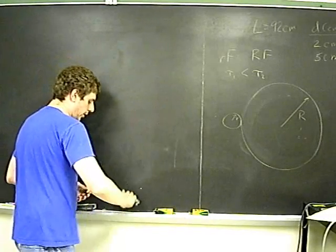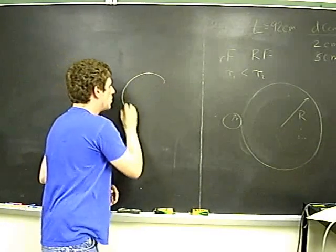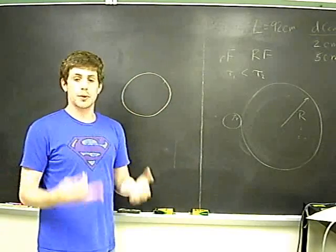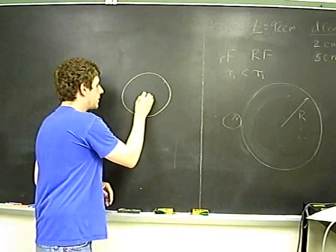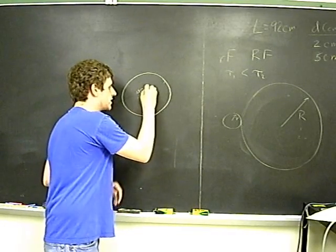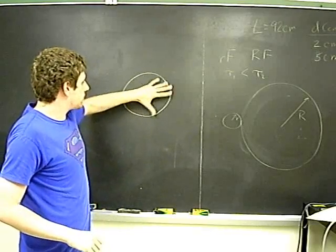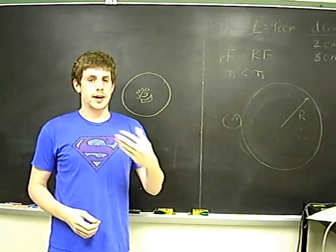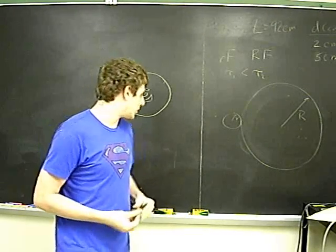Now in Tesla's turbine, what you have are a series of flat disks. Disks are much easier to produce, and all you have is a slot or a series of holes in the center. This is a much simpler design. That's why it's used a lot by amateur scientists wanting to experiment with this turbine.